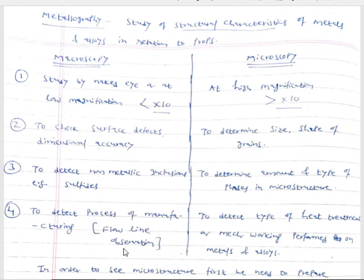The second difference: macroscopy deals with checking of surface defects and dimensional accuracy, while microscopic examination deals with determination of size and shape of grains — as we had seen in the context of coarse-grained and fine-grained structures. To detect non-metallic inclusions in metals and alloys, macroscopic examination is preferred — for example, detection of the distribution pattern of sulfide particles in iron-carbon alloys.